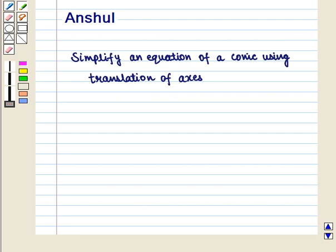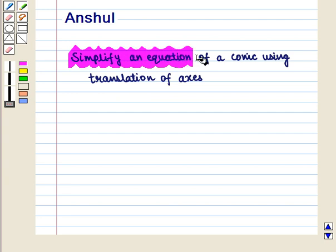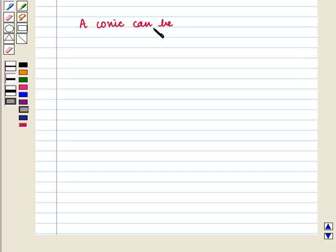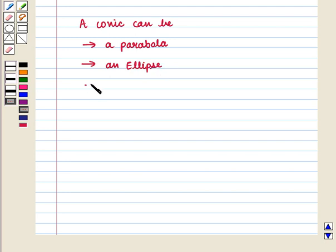Hello and welcome to the session. In this session we will discuss how to simplify an equation of a conic using translation of axis. A conic can be a parabola, an ellipse, a hyperbola, or a circle.